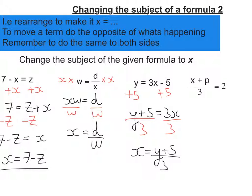So the last one here, x plus p over 3 equals 2. So the first thing I would do is times everything by 3, so we remove the fraction first. So let's do that, let's times everything by 3, putting that in a bracket, and times everything by 3.